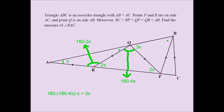If this is 3X and this is 3X, this angle has to be 180 minus 6X. Why? Because three angles should add up to 180. If you know the measures of two of them, you can find the third one by subtracting the sum of the other two from 180.